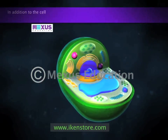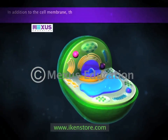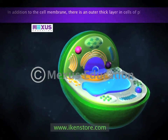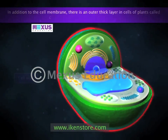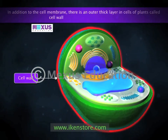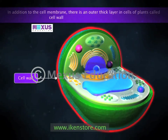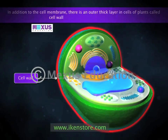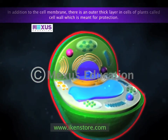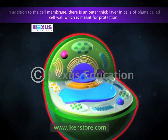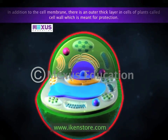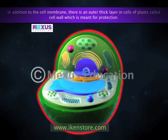In addition to the cell membrane, there is an outer thick layer in cells of plants called the cell wall. This additional layer surrounding the cell membrane is required by plants for protection against variations in temperature, high wind speed, and atmospheric moisture.